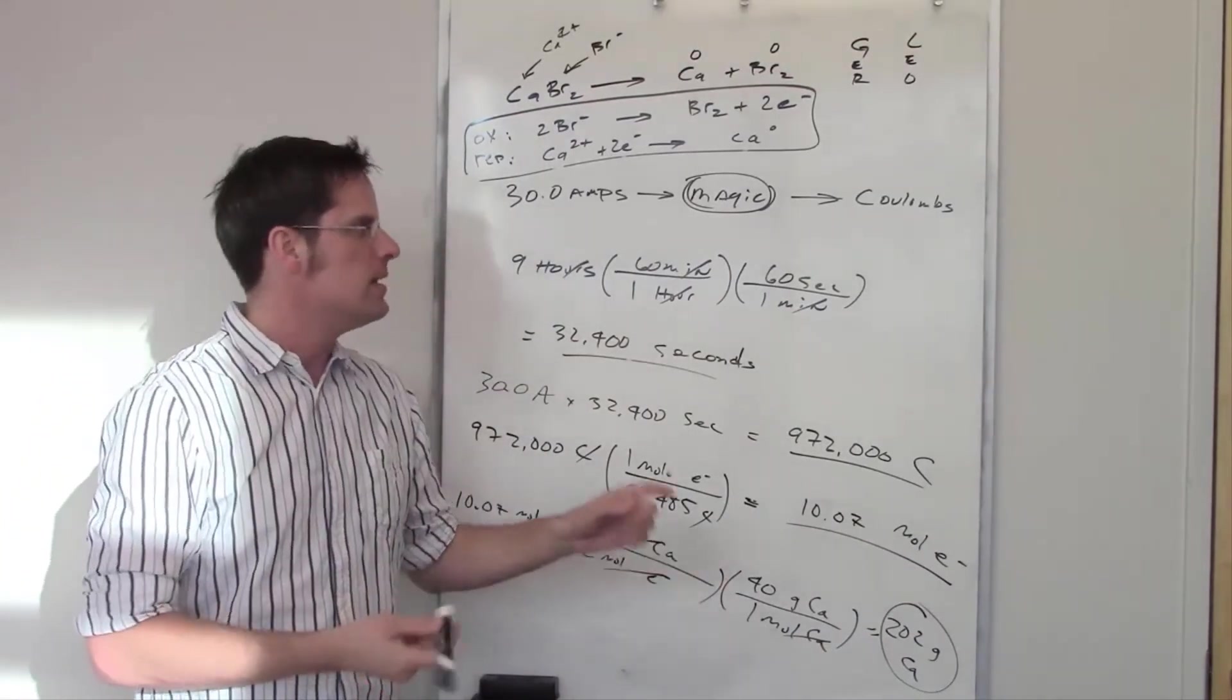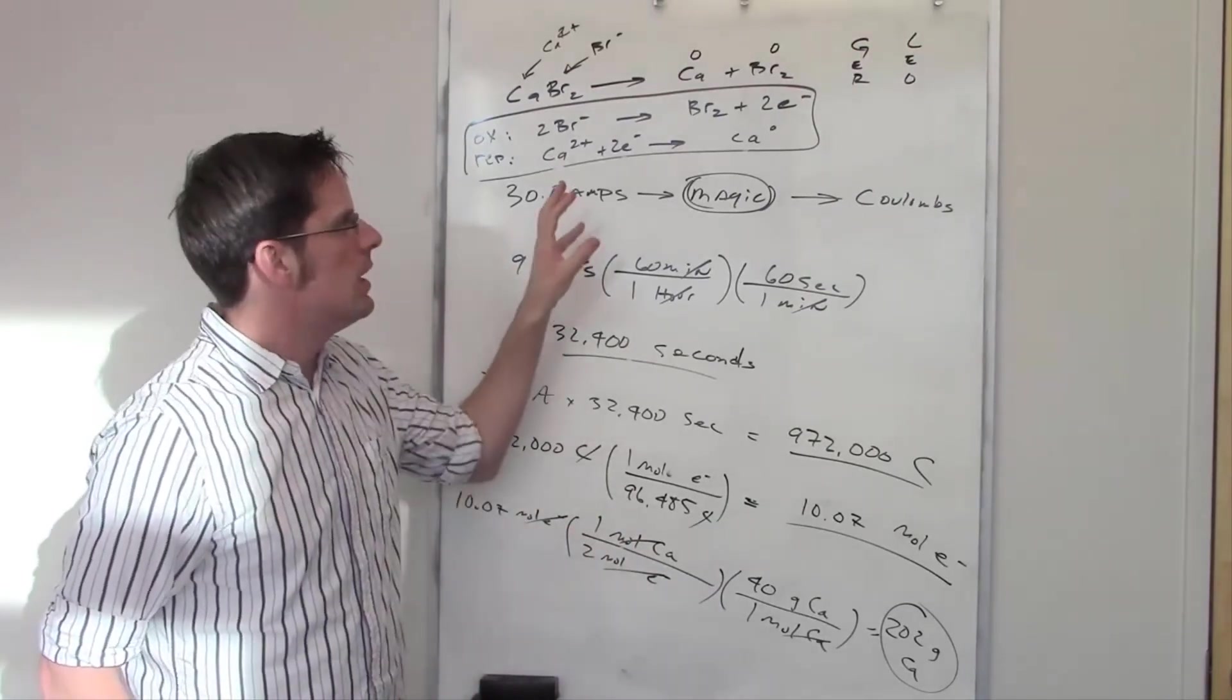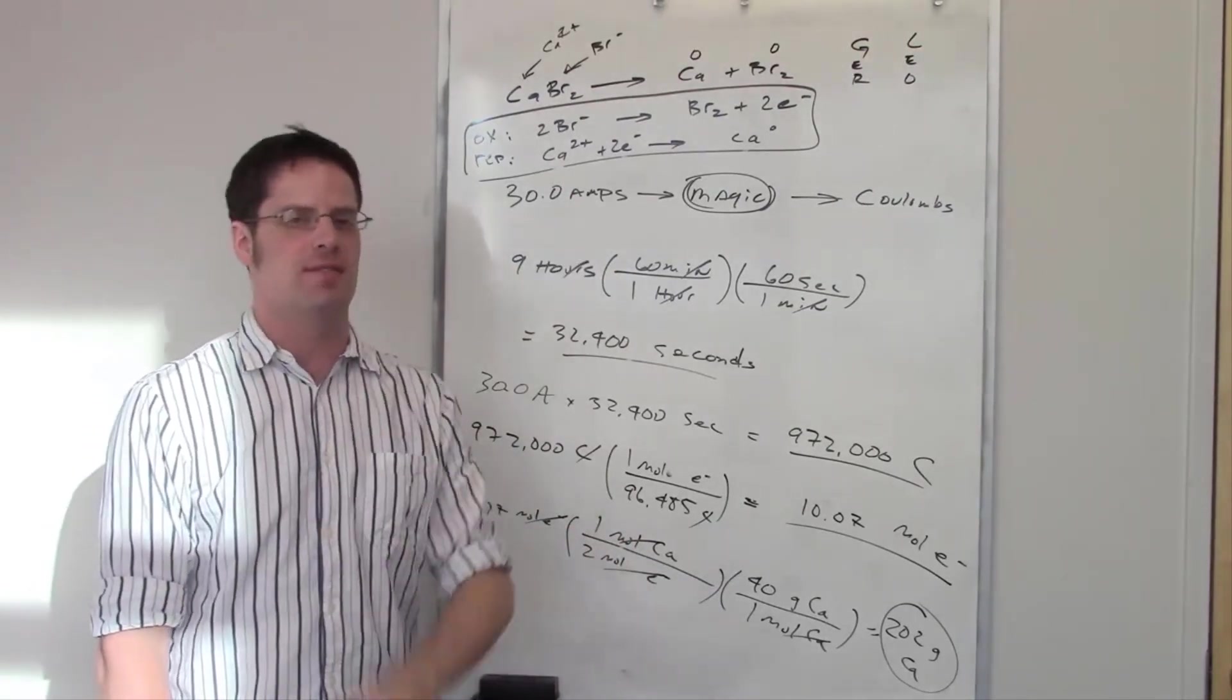When I threw that in my calculator, it came out to be about 202 grams of calcium. So that is the way or the process by which you would calculate the number of grams of something that's produced when you throw a bunch of amperage through a redox reaction for a certain period of time. Yay!